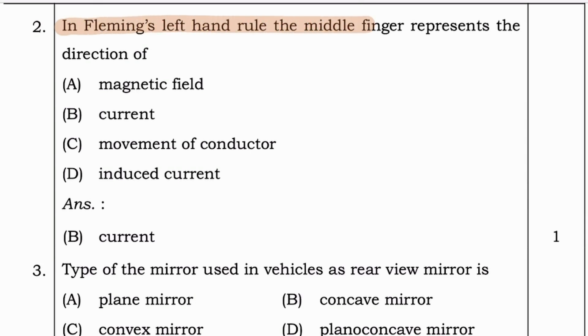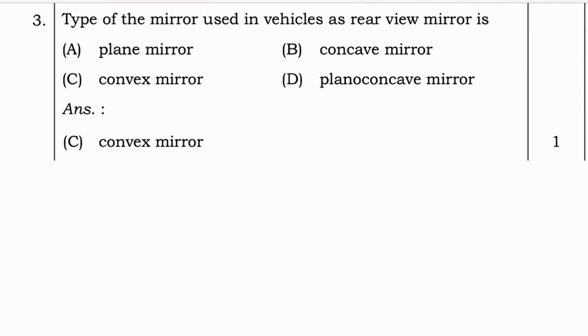Let's go to next question. In Fleming's left hand rule, the middle finger represents the direction of magnetic field, current, moment of conductor, or induced current. And answer for this question is option B, current.